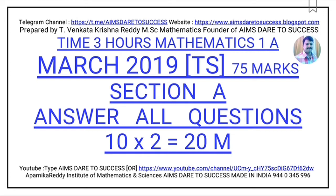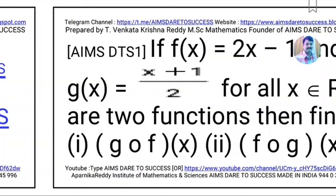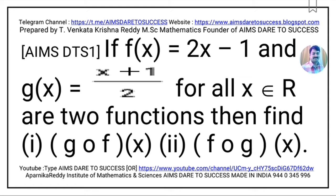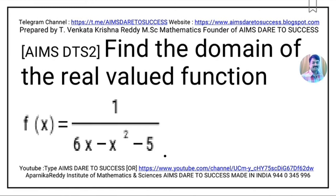Now, 2019 March Telangana Paper Pattern, Mathematics 1A. From this paper I want to show you Section A — answer all questions. Out of 10 questions you write all 10, so 10 into 2 equals 20 marks. First question: If f(x) = 2x − 1 and g(x) = (x + 1)/2 for all x belonging to R, then find the values of g∘f(x) and f∘g(x). This question is from Functions.